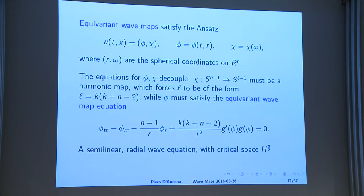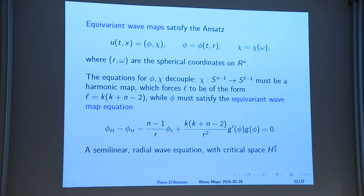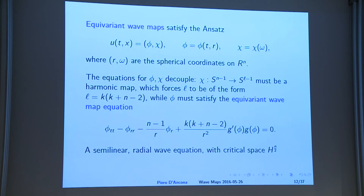We assume that phi, the radial component of U, depends only on time and on the radial variable on Minkowski space, and chi depends only on the angular variable on the space component. You get that chi has to satisfy just the harmonic map equation between spheres, which gives some rigidity to the dimensions. Then phi satisfies a nice equation — just a radial semi-linear wave equation — but with some singularity which makes it scale-critical. The critical space is still H^{n/2}.